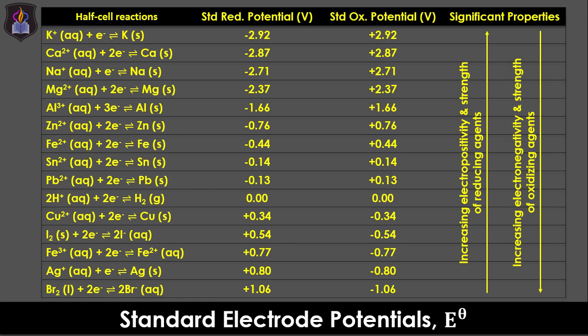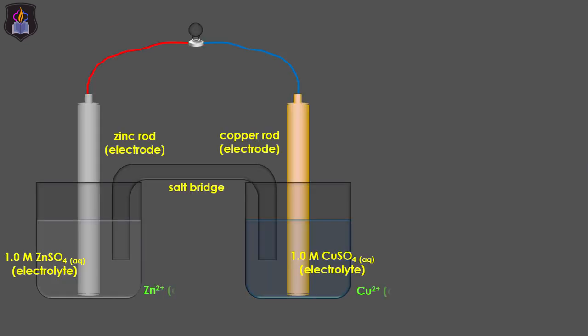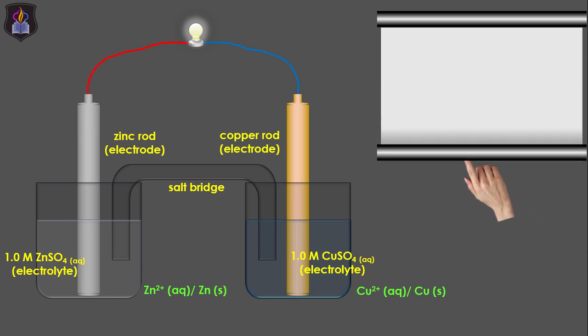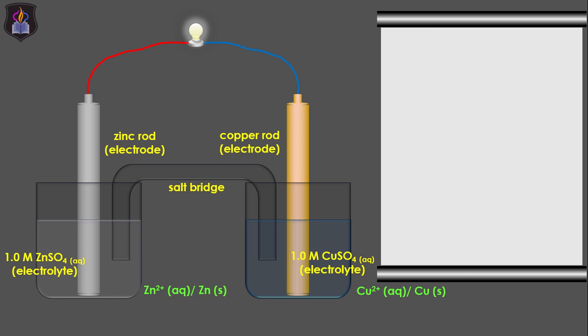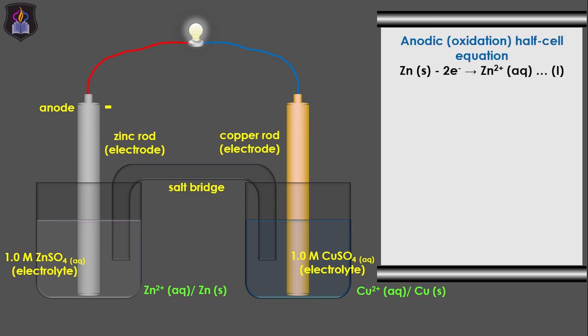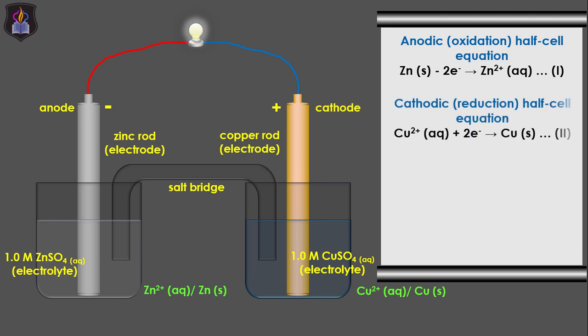If the zinc and copper half cells are connected to each other by a piece of wire and separated by a porous partition, the zinc half cell will lose electrons to the copper half cell. The electrons will be lost by the zinc atoms in the zinc electrode and gained by the copper ions in the copper electrolyte. This flow of electrons, which is current, does work like lighting a bulb or powering a transistor radio, and is detected by a galvanometer. Since electrons are lost from the zinc half cell, it is the anode because it is where oxidation occurs, while the copper half cell is the cathode because it is where reduction occurs.